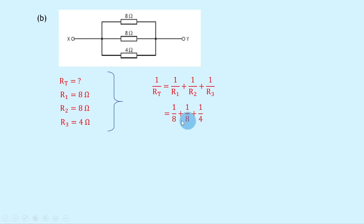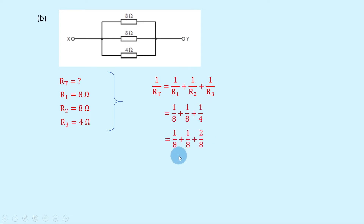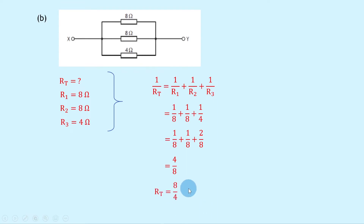Remember there are several things you can do at this point: you can either use the lowest common denominator method, the brackets method, or the x to the minus 1 method on your calculator. Using the lowest common denominator without a calculator, I multiply the top and bottom of 1 over 4 by 2, giving 1 over 8 plus 1 over 8 plus 2 over 8, which simplifies to 4 over 8. Since this is 1 over RT, I flip both sides to get RT equals 8 over 4, giving a final answer of 2 ohms.